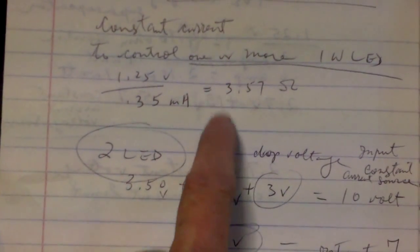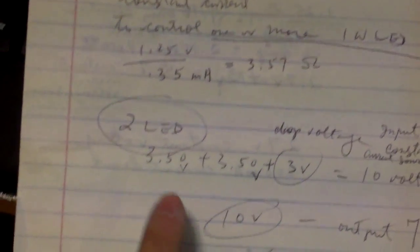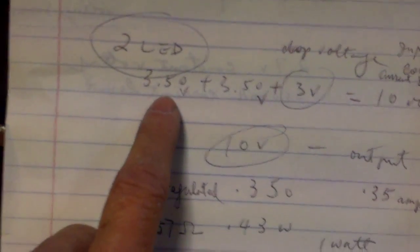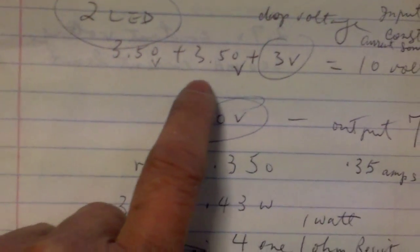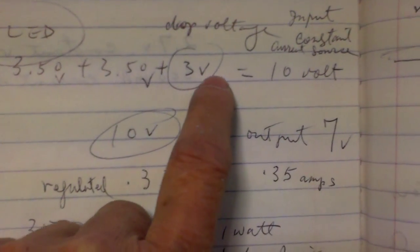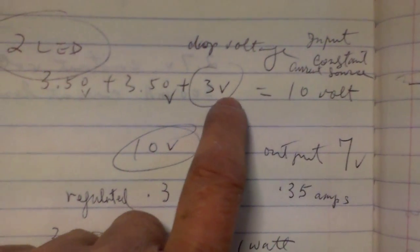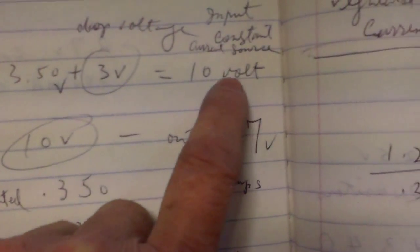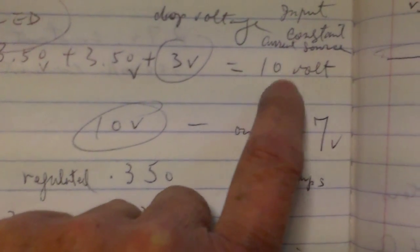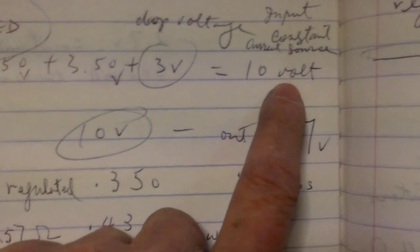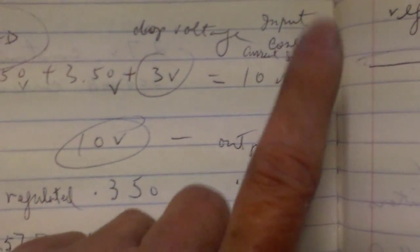The voltage output will be regulated to 7.2. And that will be in series 3.5 plus 3.5 plus 3 volts for the voltage drop. So the input from your DC power source should be at least 10 volts. You can give it another volt or so just to give it a bit more overhead.